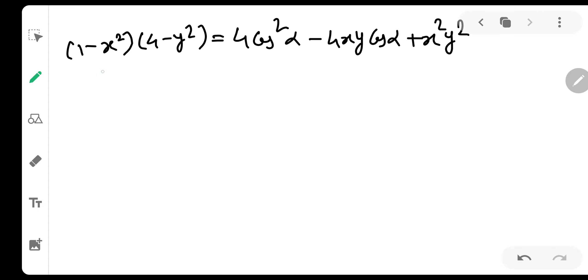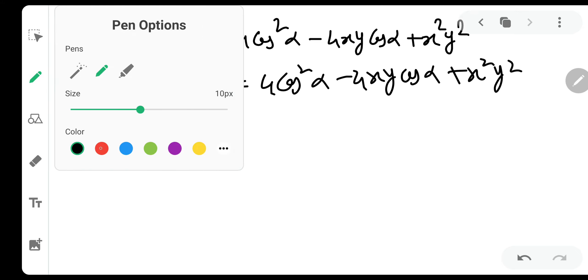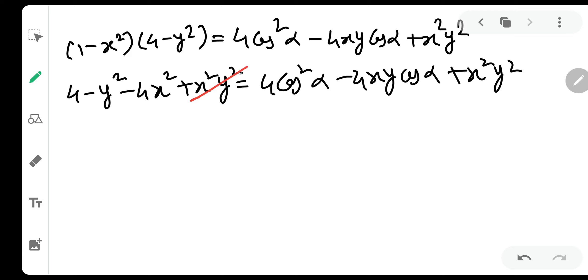Now, the only task that is remaining at hand is expand the left hand side. It will be 4 minus y square minus 4x square plus x square y square equals 4 cos square alpha minus 4xy cos alpha plus x square y square. Now, let us have a pen. Red pen for cancellation. My favorite. X square y square got cancelled and that's it. Now, how will we proceed? We will put this on the right hand side and this on the right hand side and this on the left hand side. 4 minus 4 cos square alpha. Why am I doing so? Because it is helping our case. Minus 4x square will become 4x square minus 4xy cos alpha and minus y square will become y square.